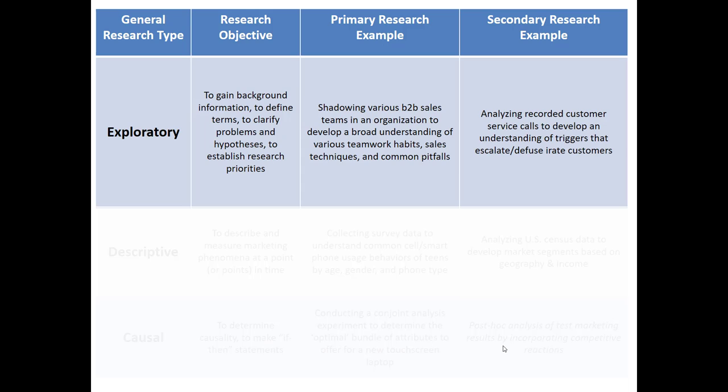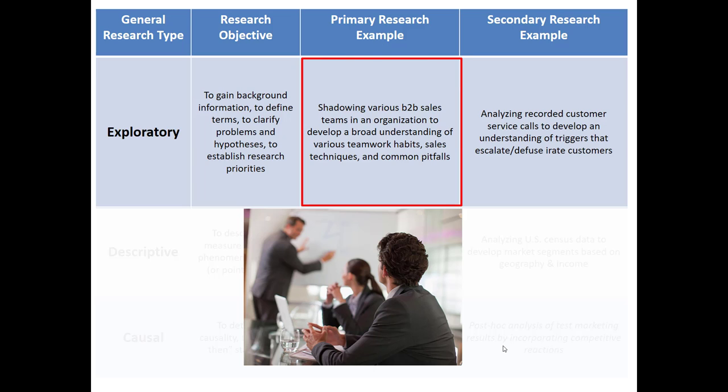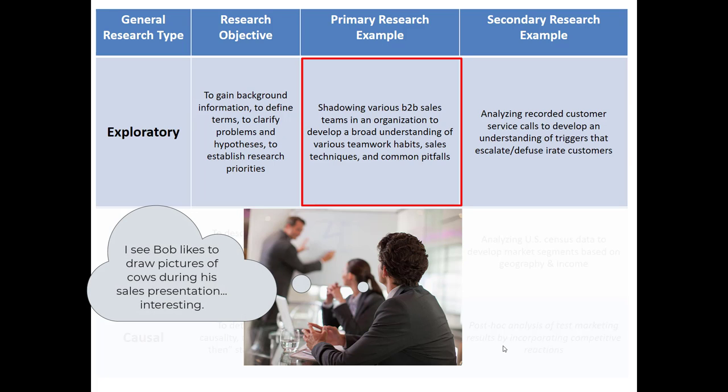So let's give an example of exploratory research in a primary research example and a secondary research example. So a primary research example might be shadowing various business-to-business sales teams in an organization to develop a broad understanding of the teamwork habits, sales techniques, and common pitfalls. So in this situation, clearly, if you are in a B2B sales situation, knowing how your sales teams behave, interact, perform is very important. But in this situation, if you're simply shadowing them, you're just looking open-mindedly to a variety of different things they may do. You don't know precisely what you're looking for yet. You're looking for those aha moments, things that might intrigue you.